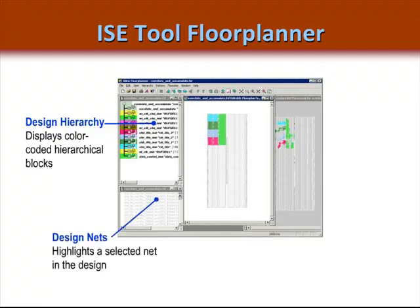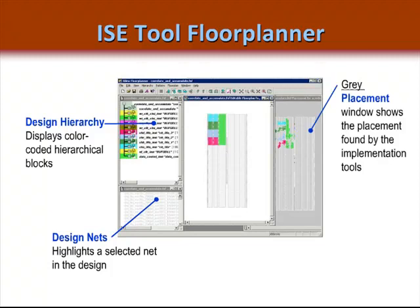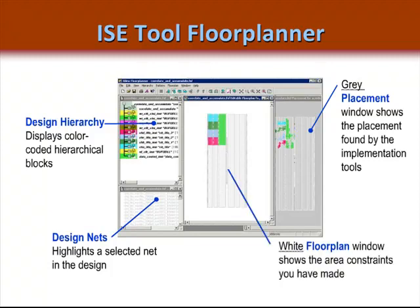You can also select nets from their own window so they become highlighted. The gray placement window contains the last implementation result found by the tools. Area constraints are made in the white floor plan window. In this case, you can see that five area constraints have already been made and are color-coded.